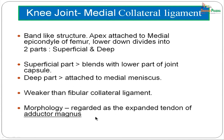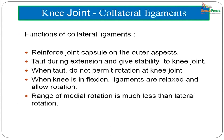The functions of the collateral ligaments: they reinforce the joint capsule on the outer aspects. They are taut during extension, providing tremendous stability, and do not permit rotation when taut. When the knee is in flexion, the ligaments are relaxed and allow a certain amount of rotation — the range of medial rotation is much less compared to lateral rotation.